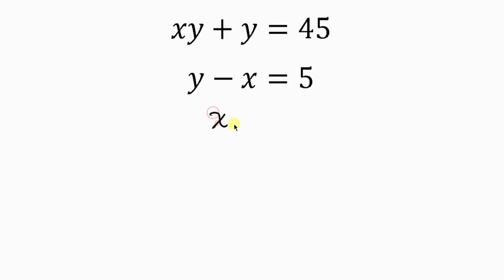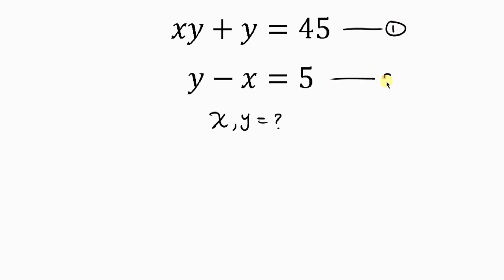Find the values of x and y, given that x·y plus y is equal to 45, and y minus x is equal to 5. We can decide to call this equation 1 and call this equation 2. I'm going to be starting from equation 1.